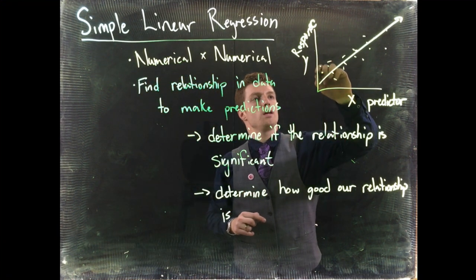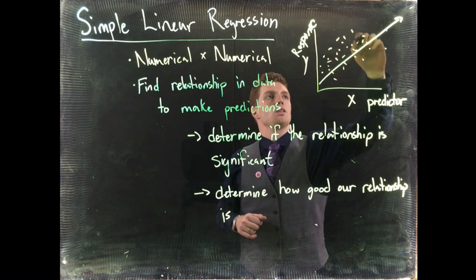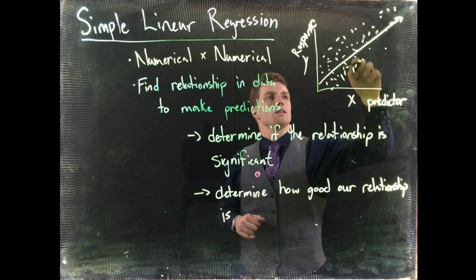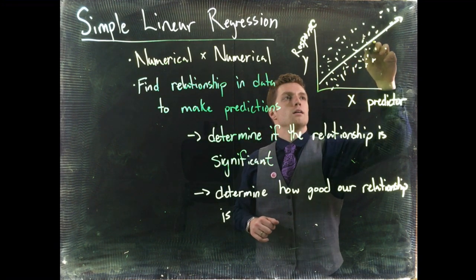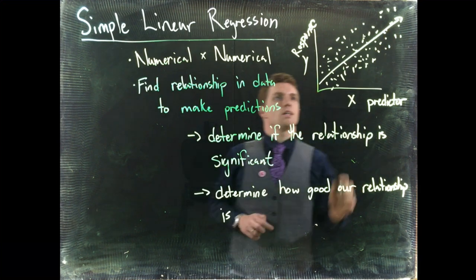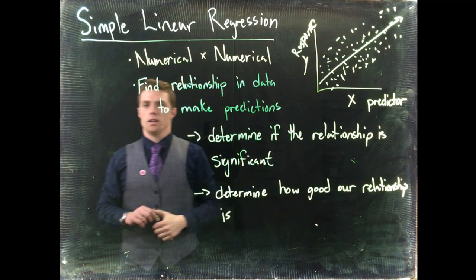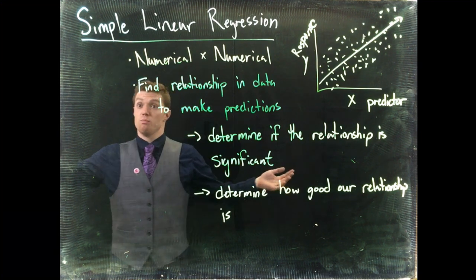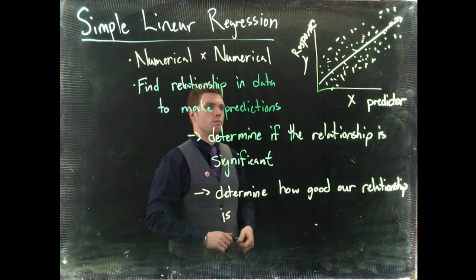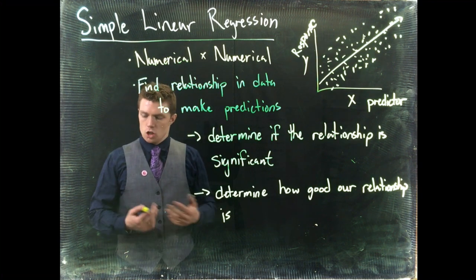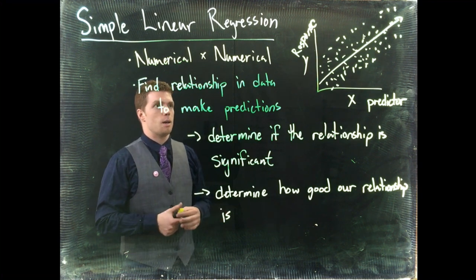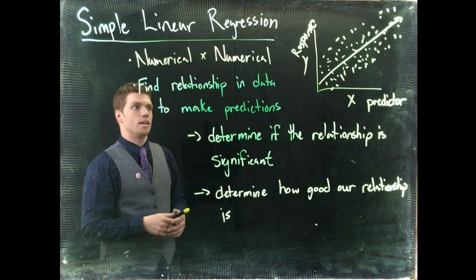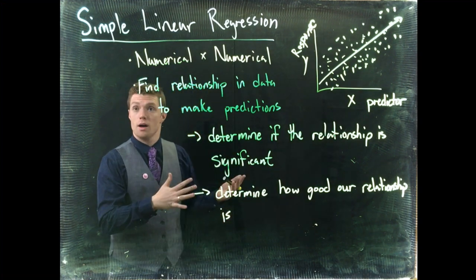but what if we also had seen something that looked more like this? The question to you would be, is there still a relationship there? And I'd say, yeah, there's still a relationship. But now it's more spread out. There's more noise in the system. So X is still a good predictor, but it doesn't explain away as much of the variance as the previous model had.